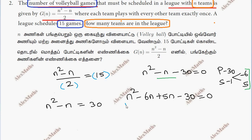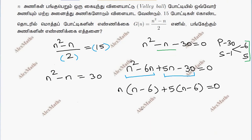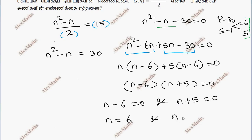Factoring the first two terms: n(n minus 6), and the last two terms: 5(n minus 6), giving (n minus 6)(n plus 5) equals 0. So n minus 6 equals 0 or n plus 5 equals 0, meaning n equals 6 or n equals minus 5.